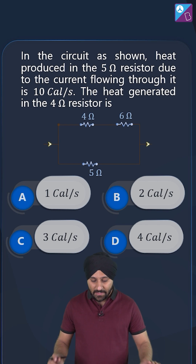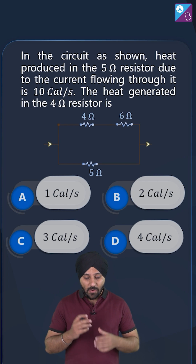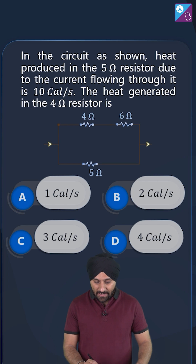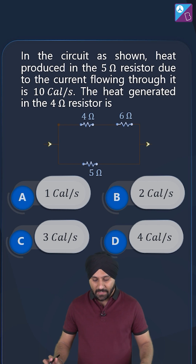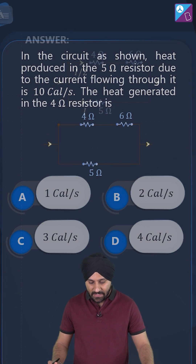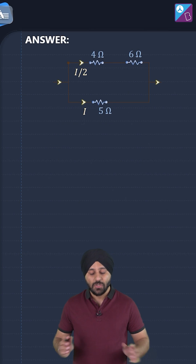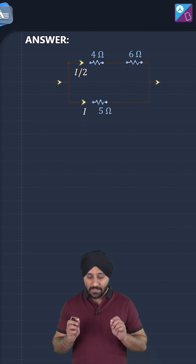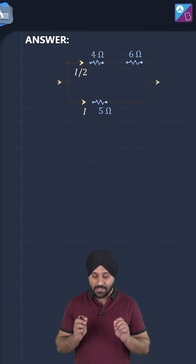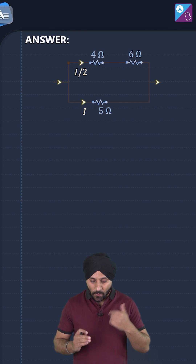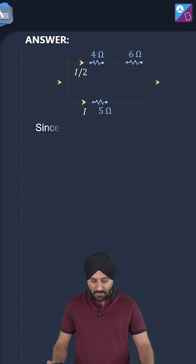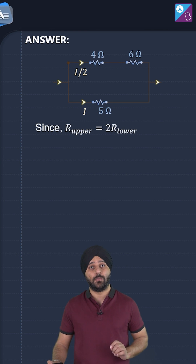Clearly, the 4 ohm and 6 ohm resistors are in a series connection with each other. So the total resistance of the 4 ohm and 6 ohm branch is 10 ohm, which is twice the resistance of the 5 ohm resistor.